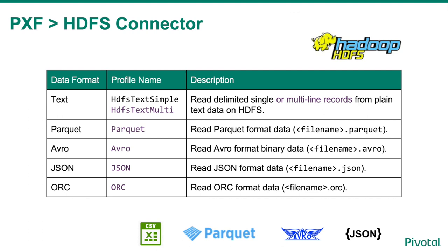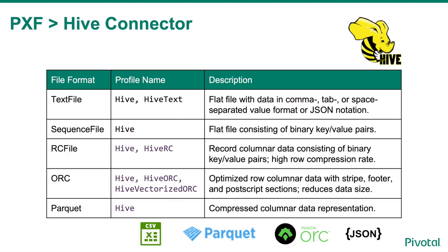The HDFS connector allows PXF to read data stored in Hadoop HDFS in four different formats: simple text format with field delimiters, JSON, and optimized storage formats such as Parquet, Avro, and ORC. The PXF Hive connector allows users to query data managed by Hive. It supports simple formats such as text and JSON, as well as optimized file types such as ORC and Parquet. When reading from a Hive table, PXF does not dispatch the query directly to the Hive execution engine, but instead reads and processes the underlying files directly.